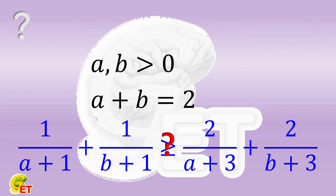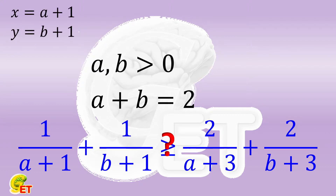The form of the conclusion to be proved is slightly unnecessarily complicated. We can simplify it a little bit before we get to the real proof process. This simplification is not necessarily essential, but it usually helps to find a clear way to do it. We use two new variables, x and y, where x equals A plus 1 and y equals B plus 1.